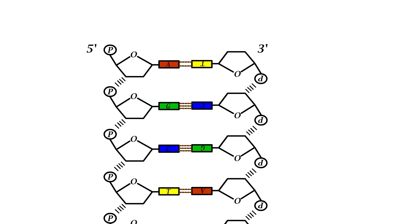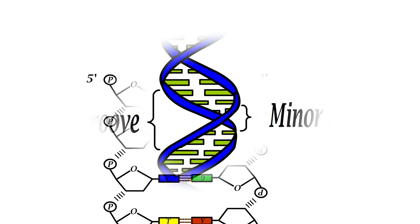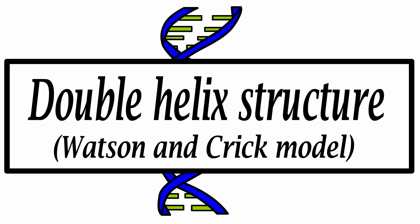This process takes place anti-parallelly, which means the 3 prime end of one chain will be complementary to the 5 prime end of the other. After this linkage, the two strands get twisted around an imaginary axis, forming major and minor grooves. This structure is known as the double helix structure and was first explained by scientists Watson and Crick.